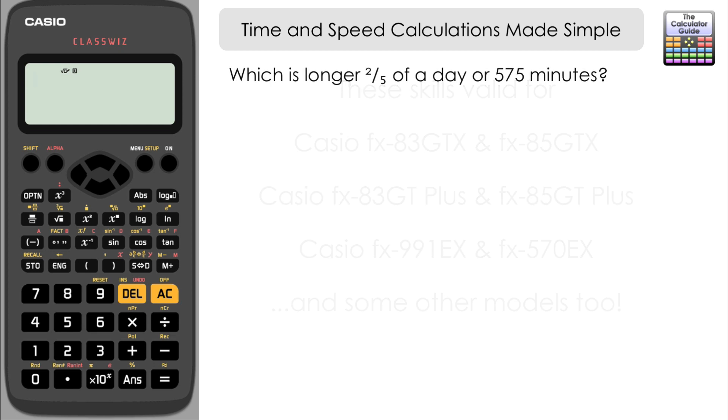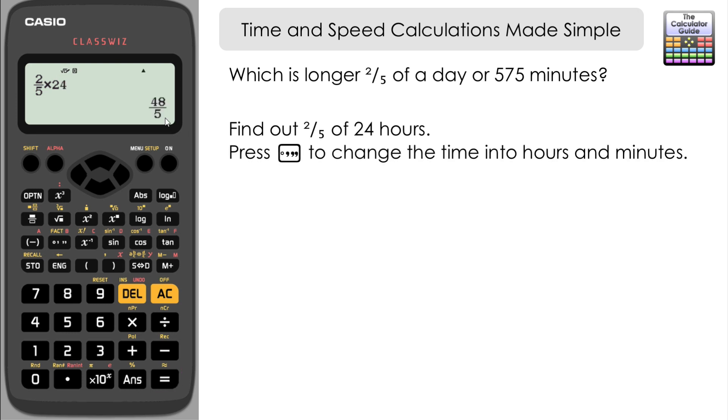The first question we have is: which is longer, two-fifths of a day or 575 minutes? We're going to start off by working out what two-fifths of a day is. We can find the time in hours by doing two-fifths of 24—24 hours in a day—so two-fifths of that will be the number of hours. We can see here we've got it displayed as this fraction 48 over 5. It doesn't really mean anything like that.